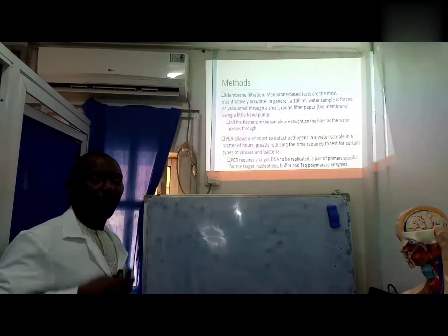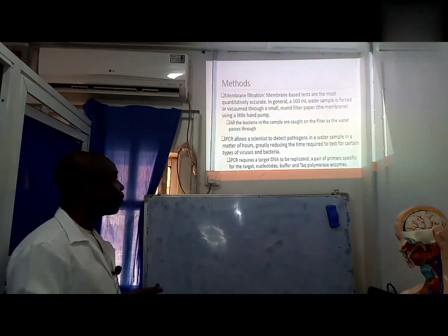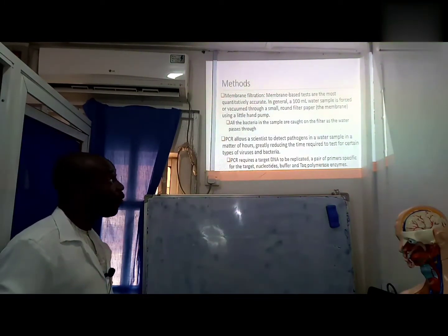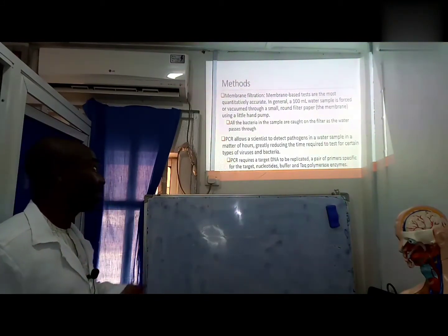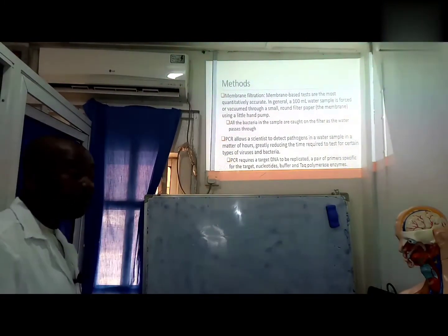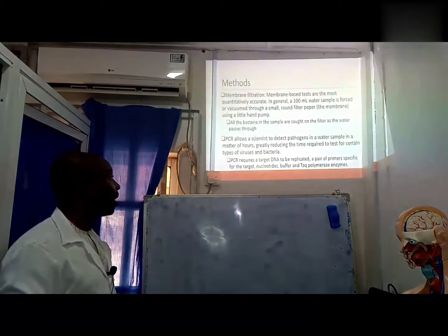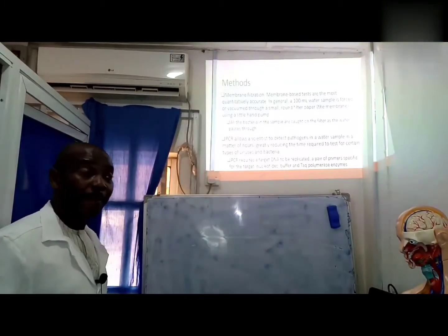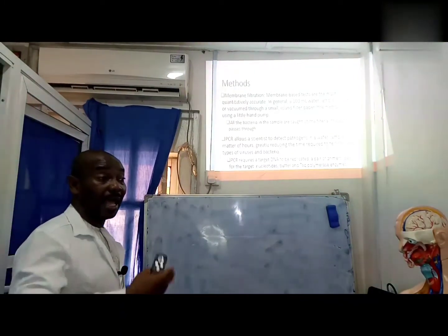Methods we use for analysis of water: first we do membrane filtration, which is very accurate. Generally, 100 ml of water sample is forced through a vacuum through a small round filter paper and the membrane using a little add-on. It is the membrane that we now use, which we believe should have retained some pathogens, that we use for analysis. All the bacteria in the sample are caught on the filters as water passes through them, and then we can now proceed with all the microbiological protocols in isolating, characterizing, and quantifying these organisms.